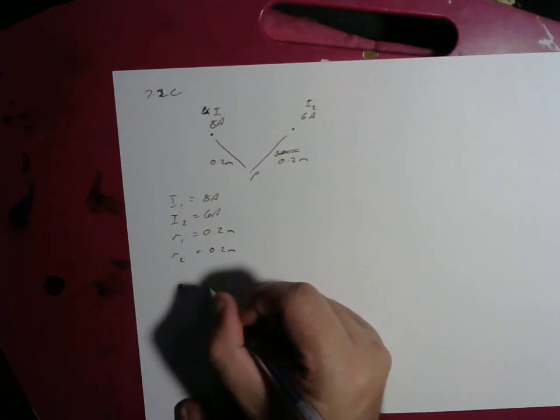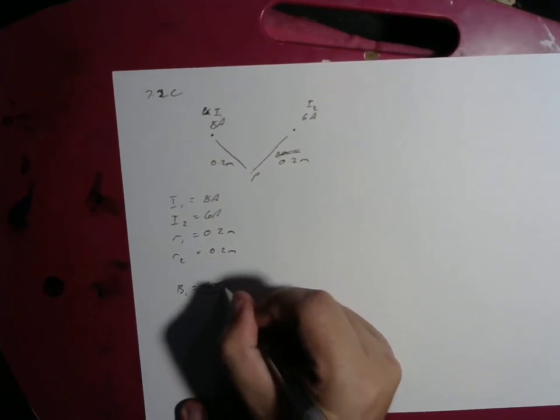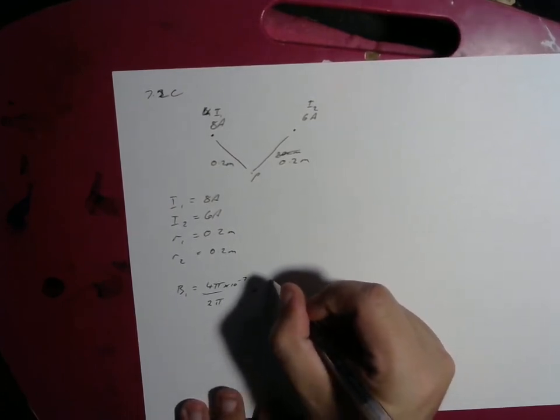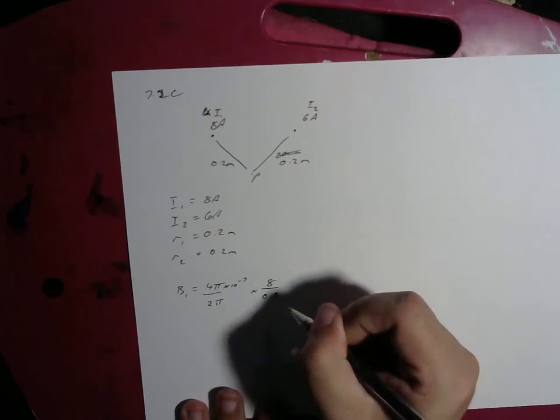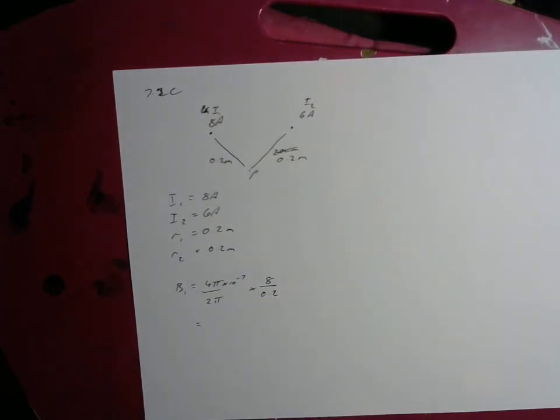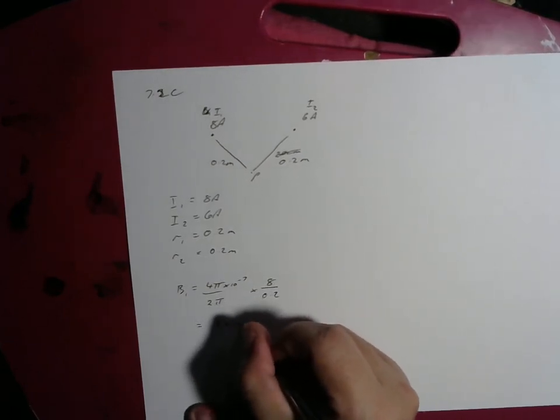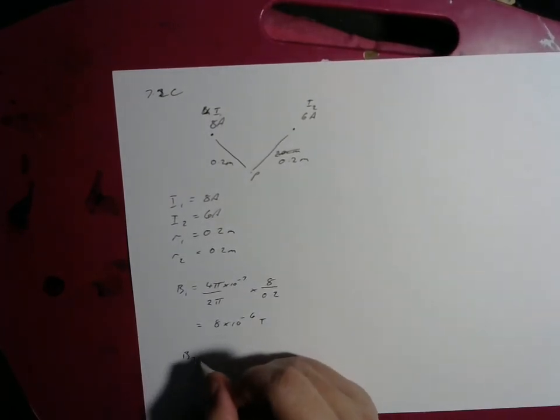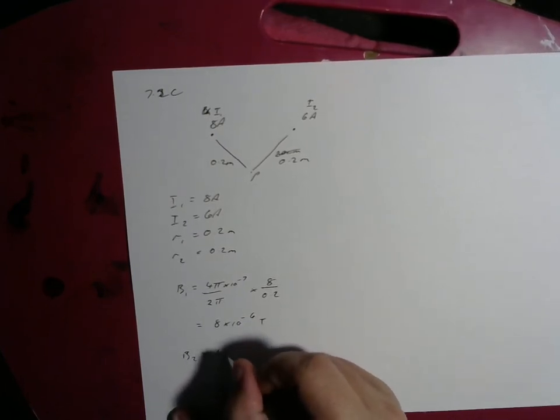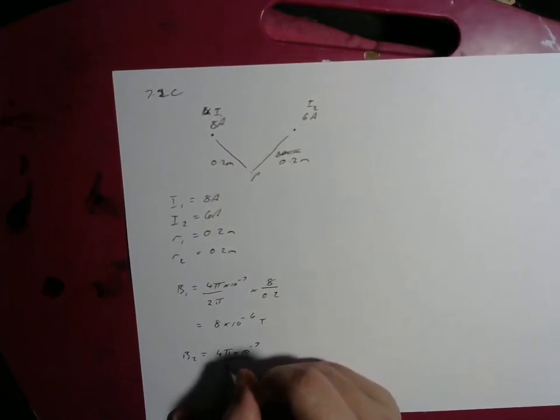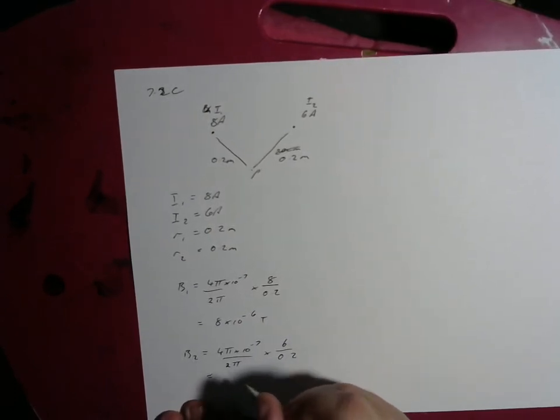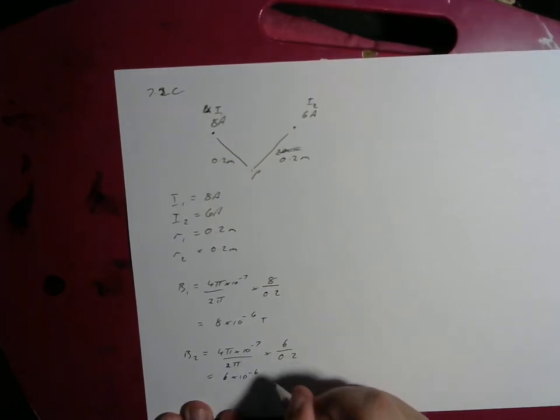B₁ will equal, let's just skip to the substitution: 4π times 10 to the negative 7 over 2π times 8 over 0.2, which will equal 8 times 10 to the negative 6 Tesla. And B₂ equals 4π times 10 to the negative 7 over 2π times 6 amps divided by 0.2, will give us 6 times 10 to the negative 6 Tesla. Now what about the direction?